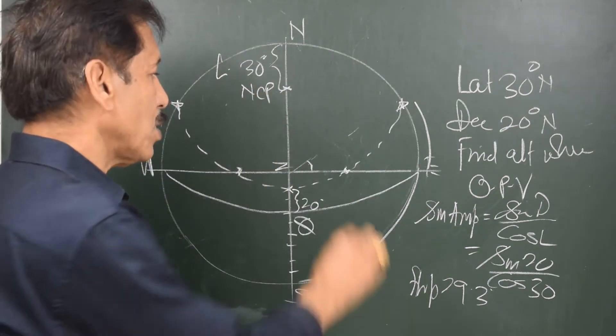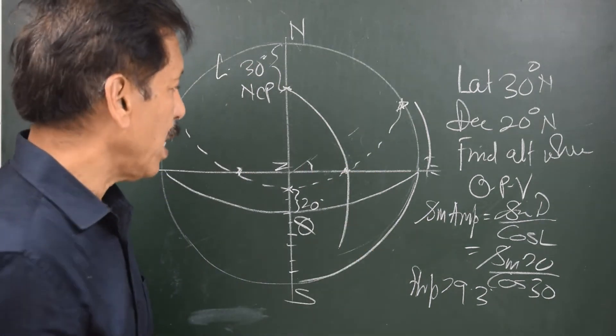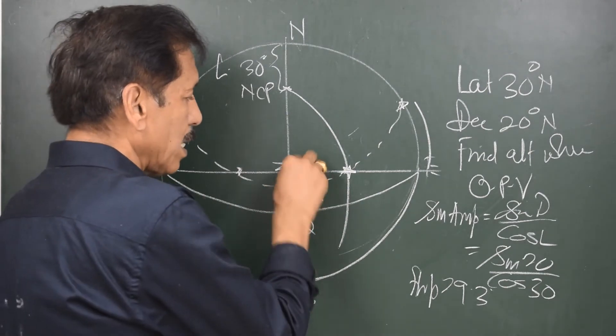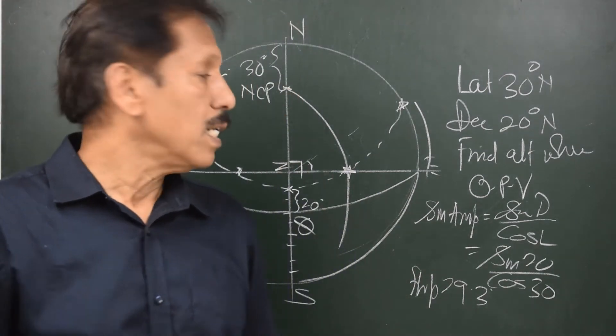So, this is north celestial pole. And while the body is crossing the observer's prime vertical, this is the meridian passing through the body. And when the body is at observer's prime vertical, the angle z is 90 degrees. So, this is the diagram you have to understand till now.